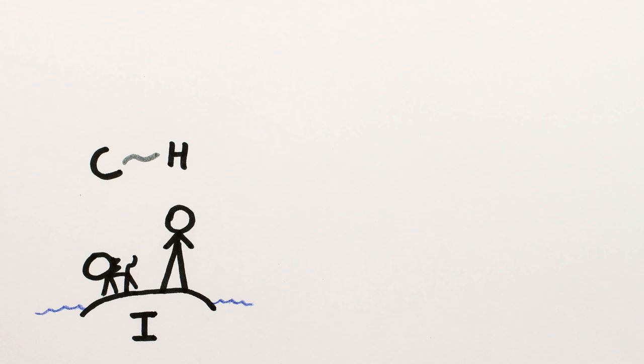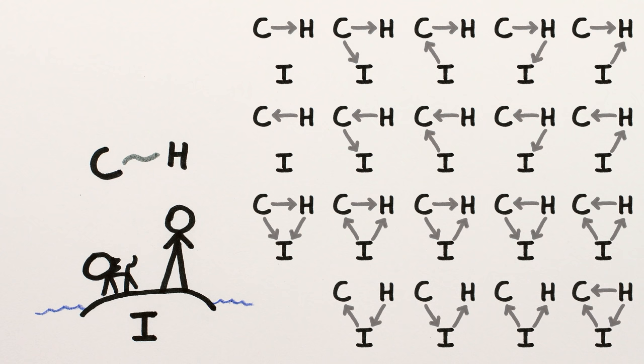Then there are 19 different causal relationships that could explain the situation, 20 if you think the correlation is just an accident. So correlation certainly doesn't imply causation yet.